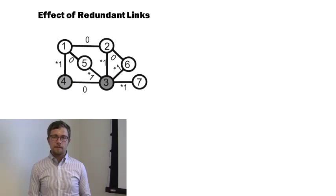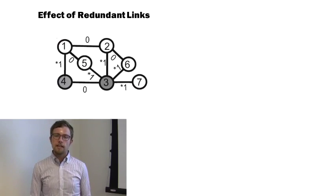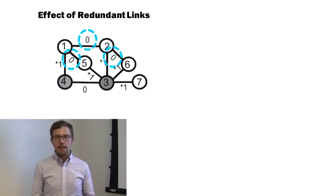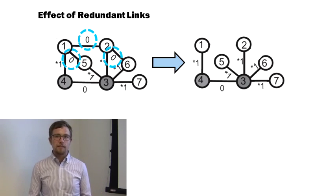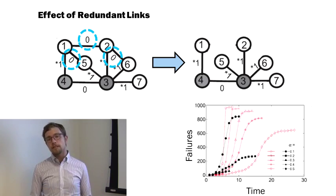The first result is if we have an optimized network, we actually find that certain links are redundant and they don't have any flow in the steady-state situation. We wanted to look at if we had those redundant links in or took them out, how that would affect the overall dynamics of cascading failures in the system. What we found is if you actually remove the redundant links...